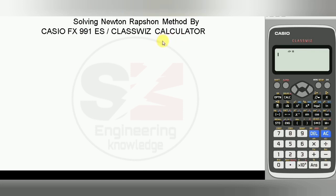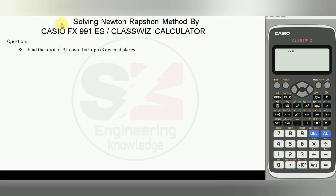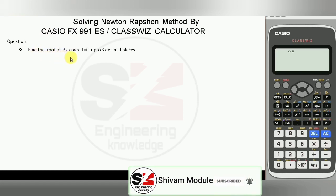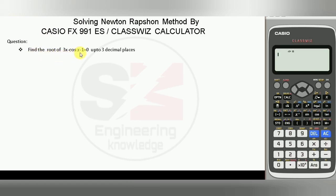A scientific calculator means this type of calculator. Let's start to solve the problem. In this tutorial, we are going to take this question: find the root of 3x minus cos x minus 1 equal to 0, up to 3 decimal places.